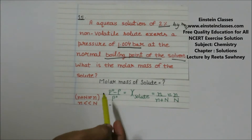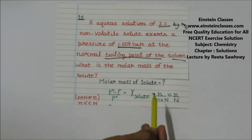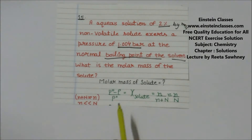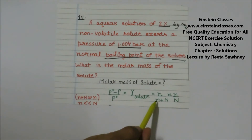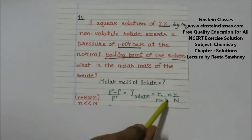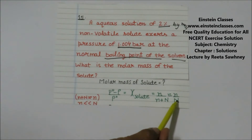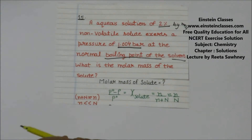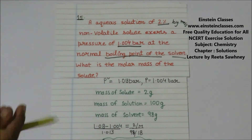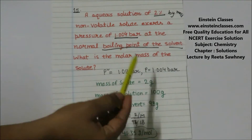To find out the molar mass of the solute, we use the formula: (P₀ - P) / P₀ = n / (n + N), where n is the moles of solute and N is the moles of solvent. Since the moles of solute are very very less compared to the solvent, we can assume that n + N ≈ N, where N is the moles of solvent.